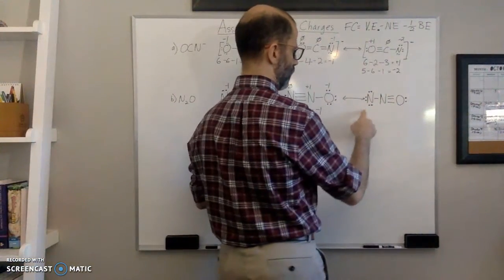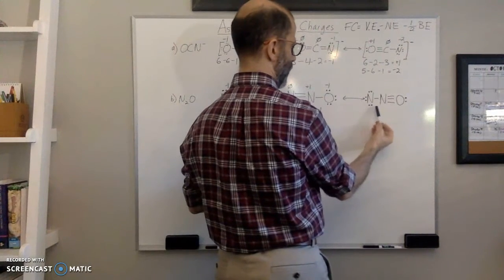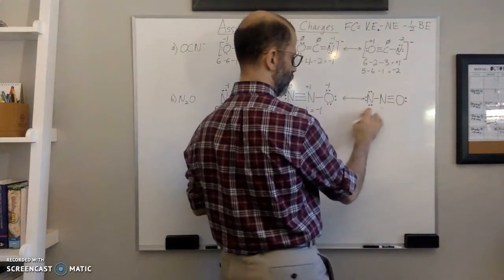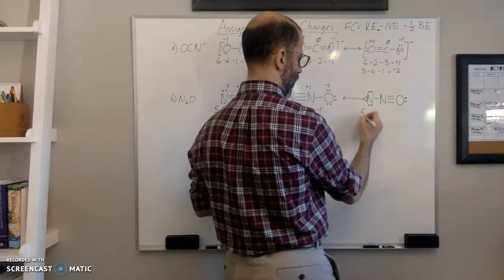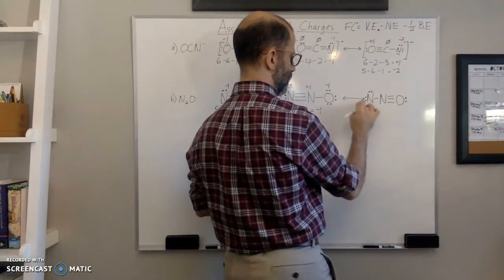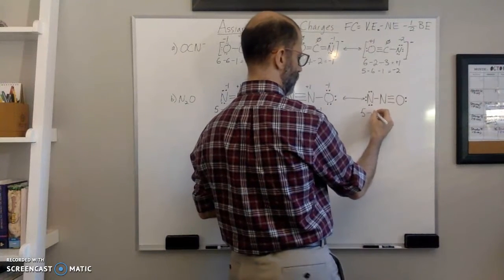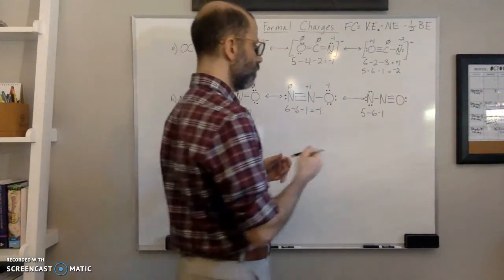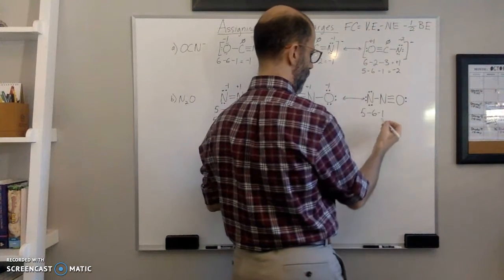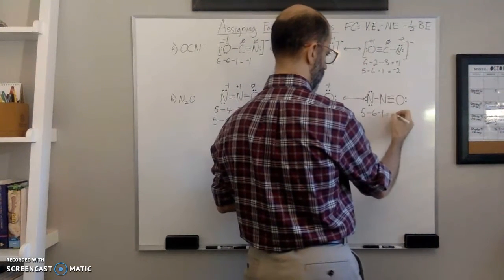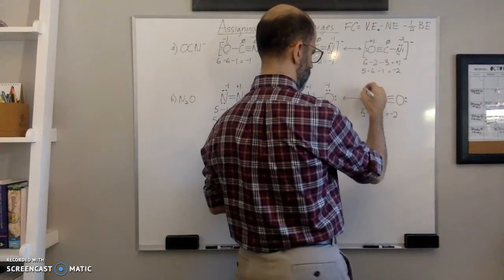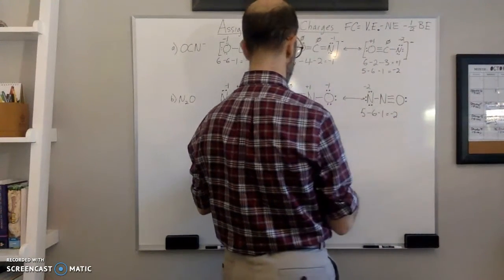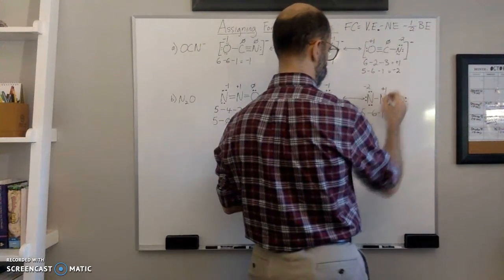In the third structure, this nitrogen has three lone pairs and one bond. Calculating: five valence electrons minus six non-bonding electrons minus one bond electron gives negative two. So this nitrogen has a negative two formal charge. The central nitrogen again has four bonds, giving it a positive one formal charge.